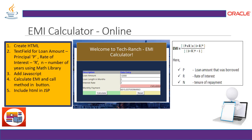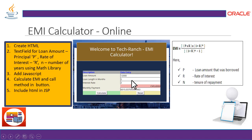The JSP contains the processing logic. Loan amount is a parameter retrieved from the user via an HTML text field. Rate of interest R and number of years N are also obtained from HTML, and the calculation is done using the Math library within a JavaScript method. When the user clicks Calculate, the button calls the JavaScript method, and after processing it returns and prints the EMI value.